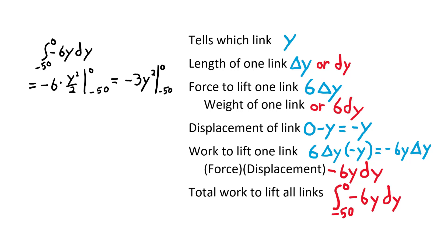The upper limit is zero, so we substitute zero in for y in the antiderivative. Then we subtract the same antiderivative with negative 50 substituted in for y, because negative 50 is the lower limit of integration. Finally, we simplify the arithmetic and find that the integral is equal to 7,500. That means the work required to lift the chain up to the deck of the ship is 7,500 foot-pounds.